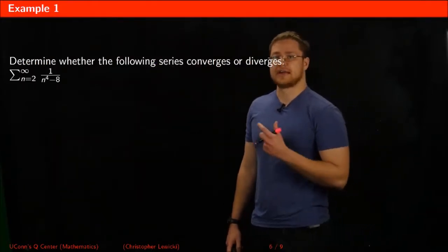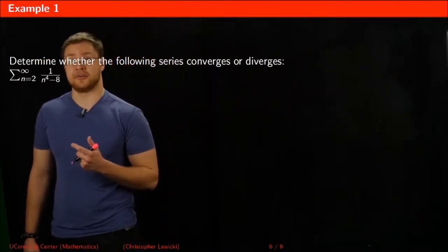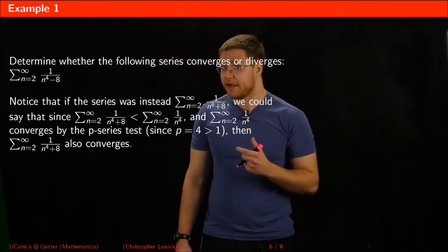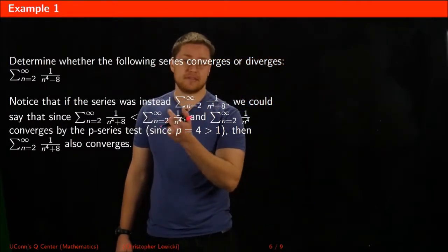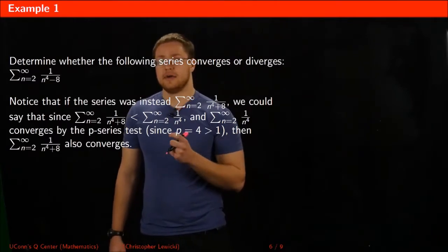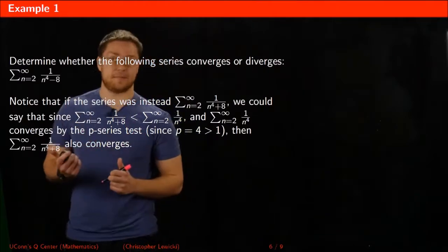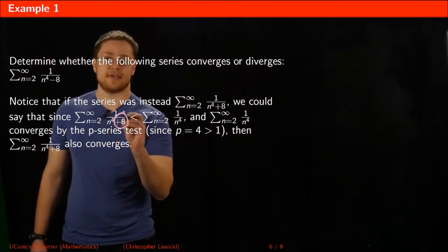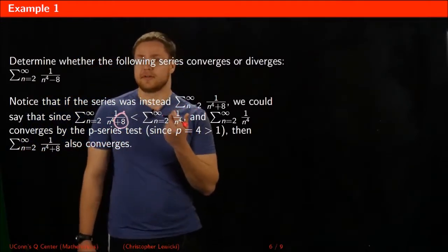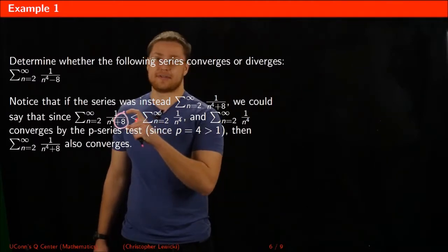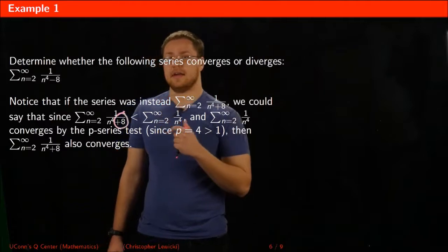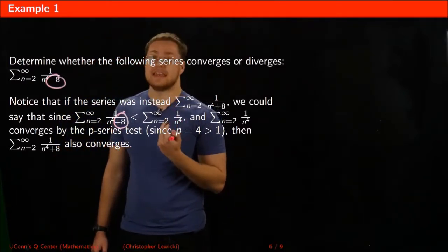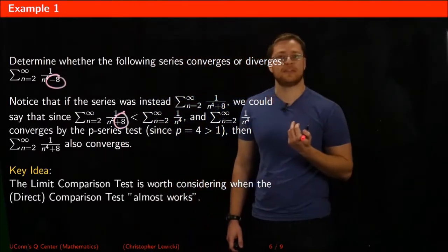Let's use the limit comparison test to figure out if the series 1 divided by n⁴ minus 8 converges or diverges. You might notice that if this series were instead 1 divided by n⁴ plus 8, we could use the comparison test comparing it to 1 divided by n⁴ to conclude convergence. You have to be careful: adding to the denominator decreases the fraction, but subtracting from the denominator makes the fraction greater, so we cannot use the direct comparison test here.